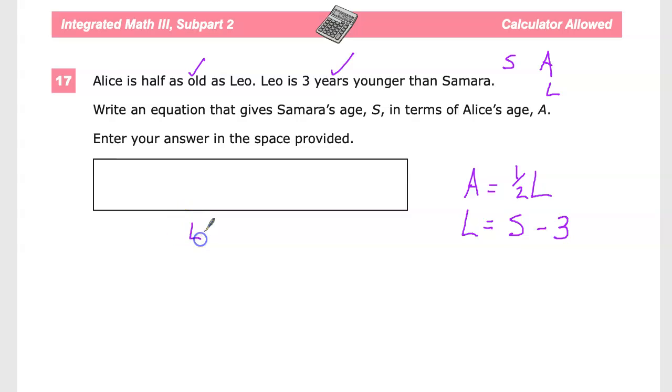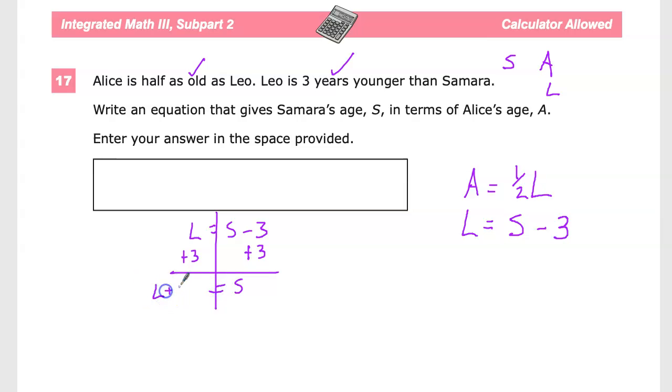In the first case, I want to find something about Samara's age, so I should probably get Samara's age by itself as a variable. So, instead of having L equals S minus three, I can just solve it essentially. I need to get rid of minus three for this to be by itself, so I'm going to use the opposite operation of plus three, and say S is equal to L plus three.